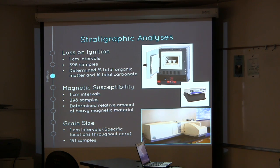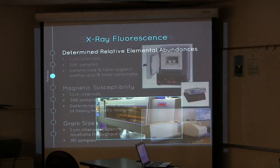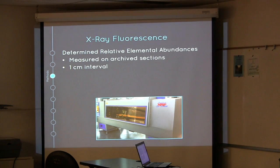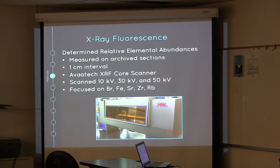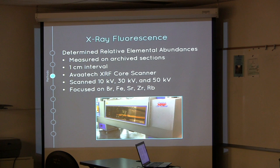Grain size was also performed on the core at one-centimeter intervals at specific locations throughout the core, to ground-truth the visual descriptions and gain higher resolution across observed contacts, totaling 191 samples. We sent our archive sections to Scripps to be scanned at three different energies for X-ray fluorescence to determine the relative elemental abundances. We focused on bromine, iron, strontium, zirconium, and rubidium.